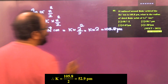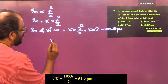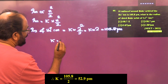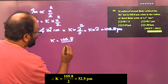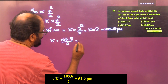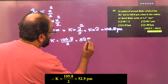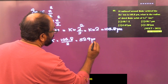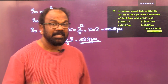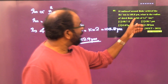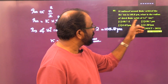Therefore we can calculate the value of k: k = 105.8 / 2 = 52.9 picometer.